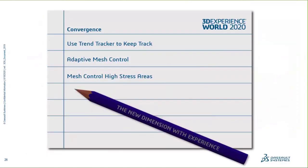To summarize the three convergence methods: the manual method of adding mesh control and running the study; the trend tracker method using sensors to follow results with a trend graph; and the adaptive method turned on via the study properties using either H-adaptive or P-adaptive meshing. The adaptive mesh control is automatic but only works on a solid mesh; the manual methods work on shell and solid meshes.